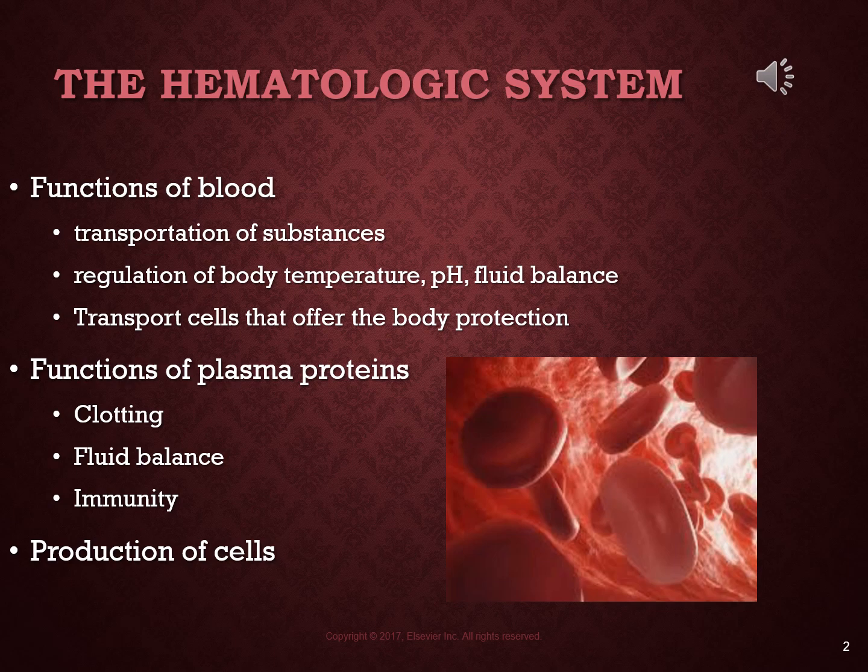The human body contains between four and six liters of blood. Of that amount, 45% is formed elements — the solid components — and 55% is liquid or plasma. We'll talk later about the hematocrit, which is the division between the solid or formed elements and the liquid or plasma.